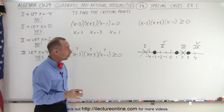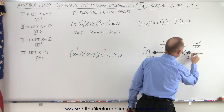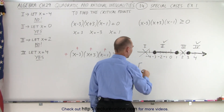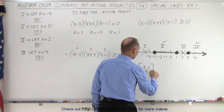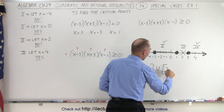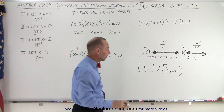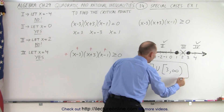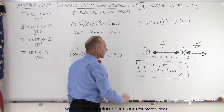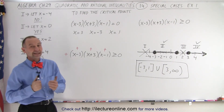Two of the four regions satisfy the inequality: the region from negative 3 to 1, and the region from 3 all the way to positive infinity. We write this mathematically as [-3, 1] ∪ [3, ∞). We use brackets because the endpoints are included, and a parenthesis at infinity because infinity is not a real number. So from negative 3 to 1 and from 3 to infinity — including negative 3, 1, and 3 — are all part of the solution set. And that is how it's done.